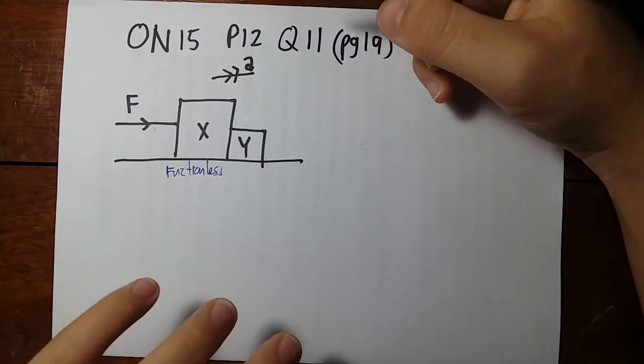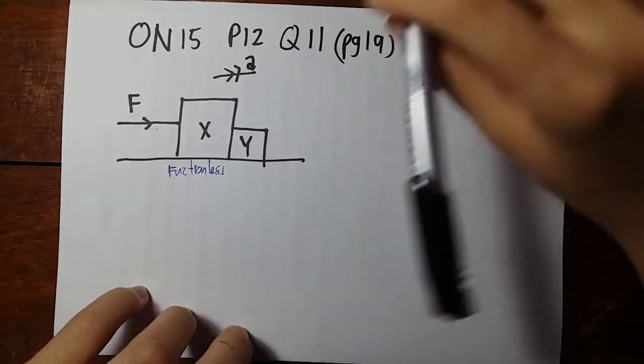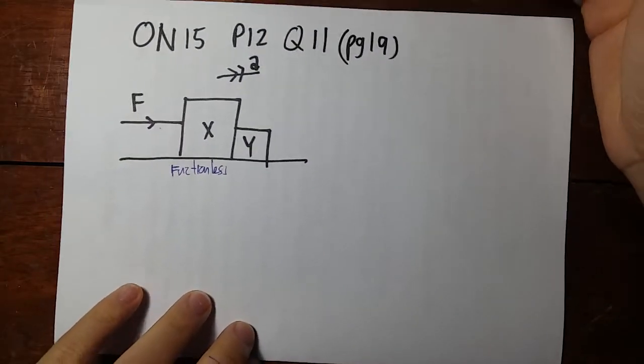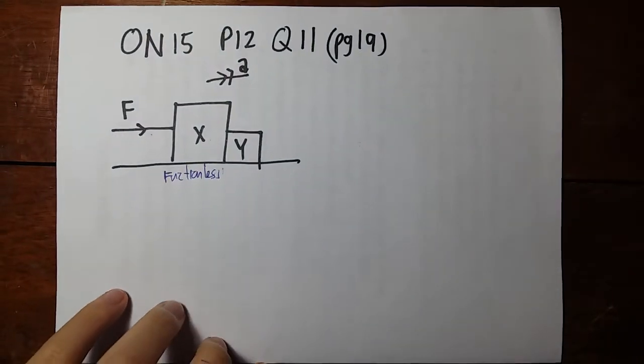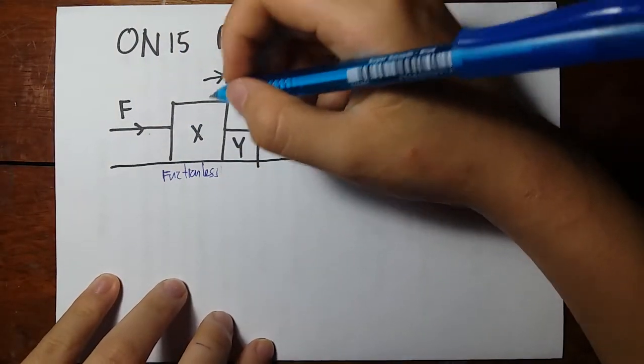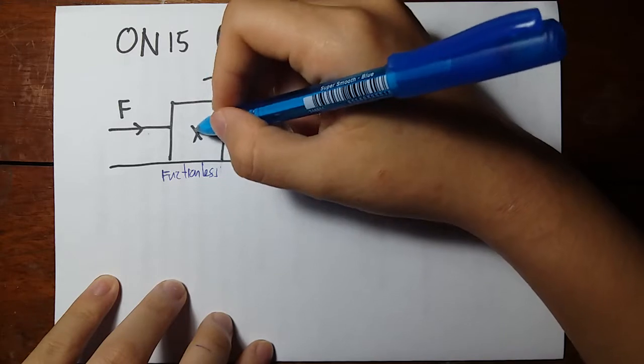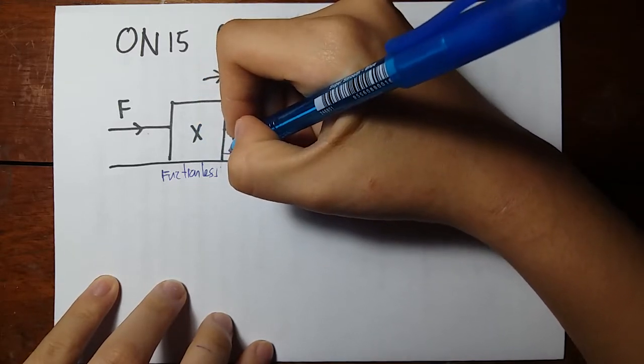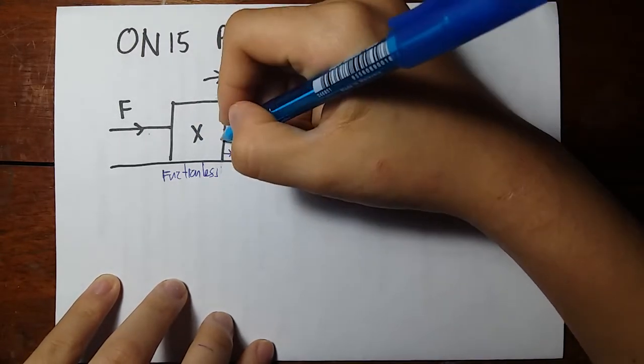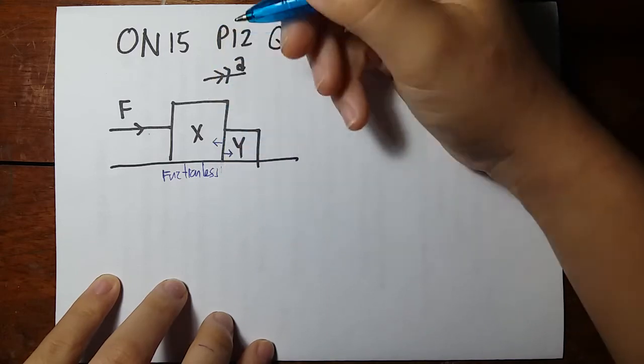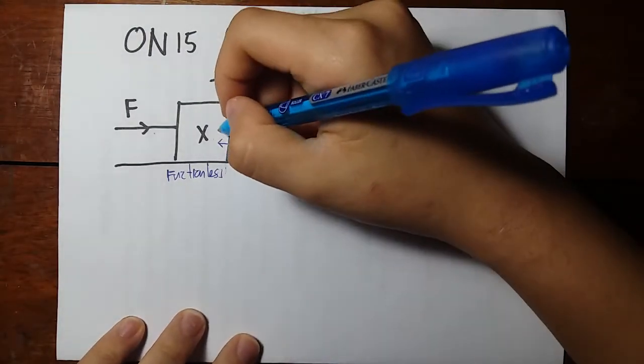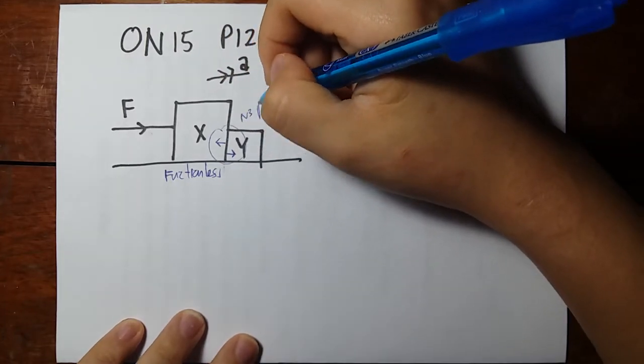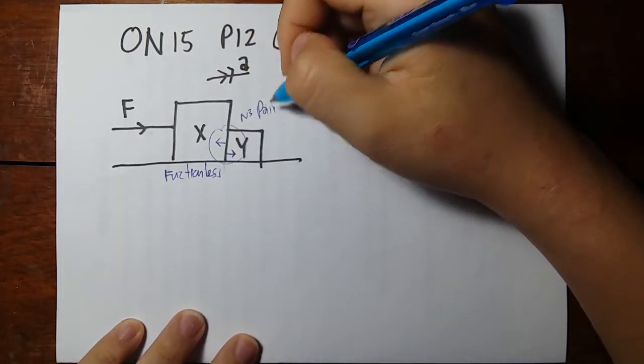First thing to know is when these two are in contact there's a contact force that appears, we know that as the normal reaction force. So block X is going to push block Y, and block Y is going to push block X. These two are what we call the Newton third law pair - both forces are equal magnitude, opposite direction.